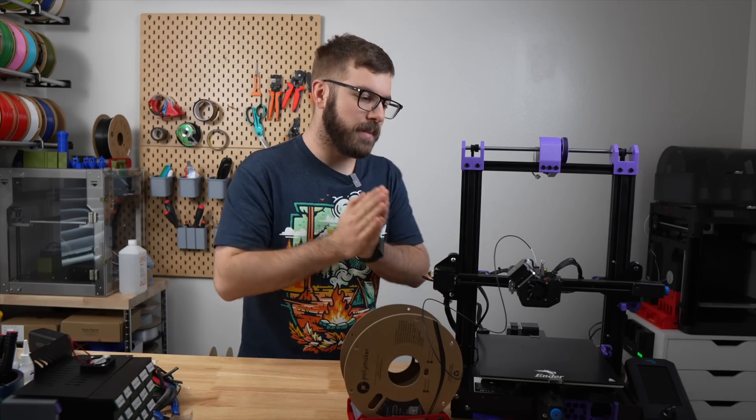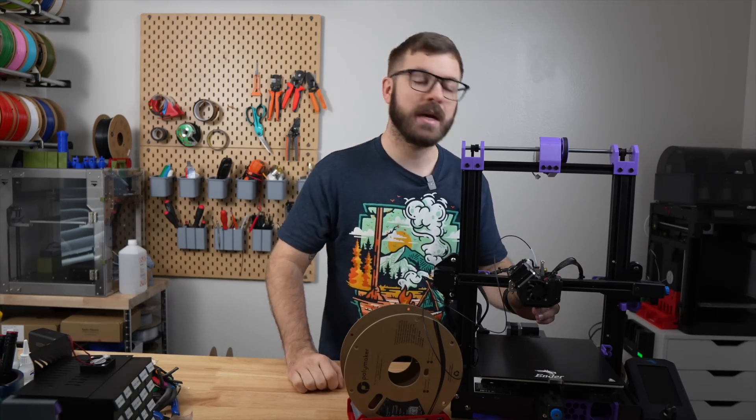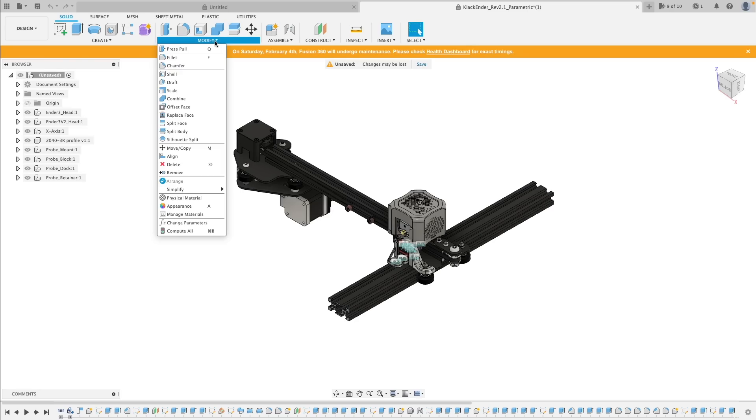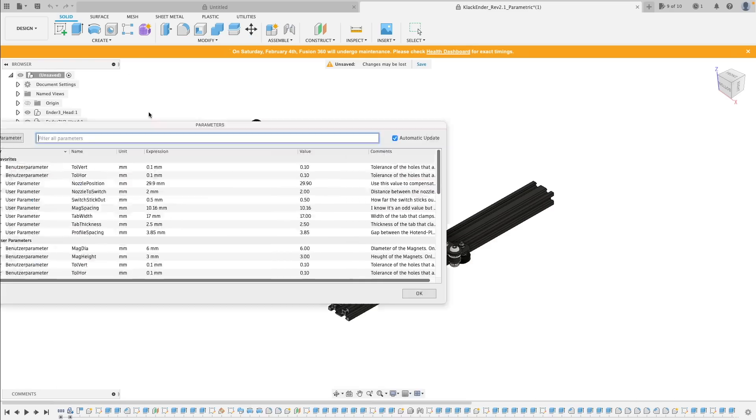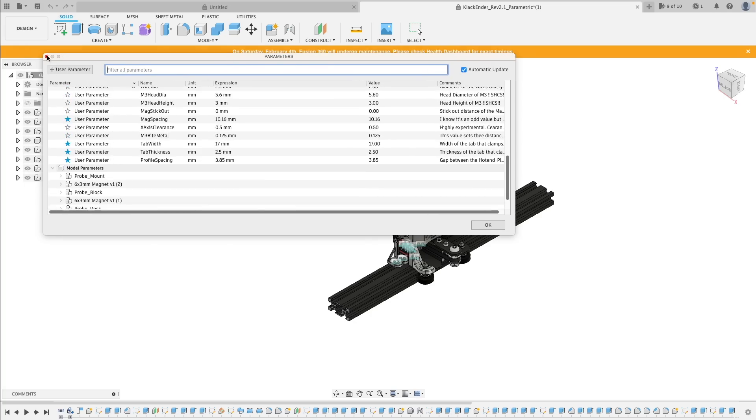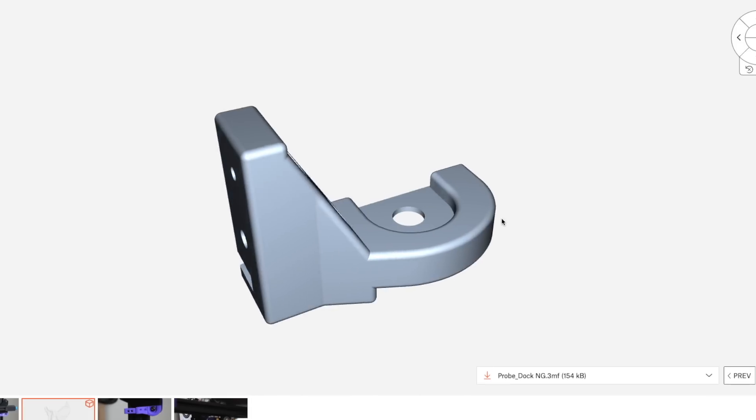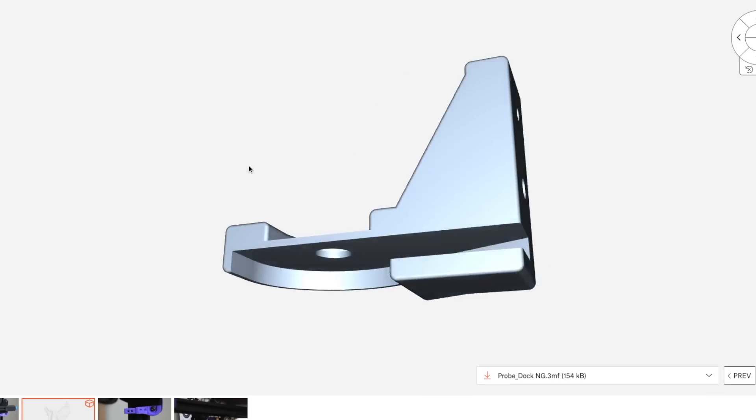For the NG, I did have to make some slight modifications specifically to the dock as well as the mount. The good news is that the CAD for the Clack Ender is all available, and there is a parametric Fusion 360 file, so you can download that and adjust things to your liking. I did go ahead and upload my remixed files for the NG extruder over to printables, so if you are running the NG toolhead, then you can just go ahead and download those.